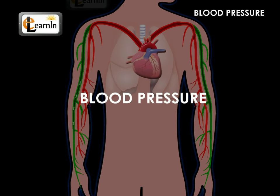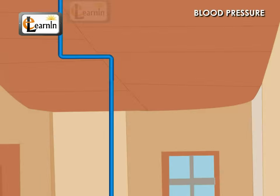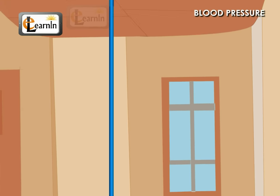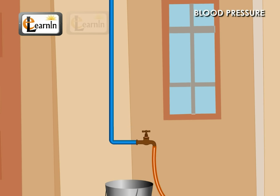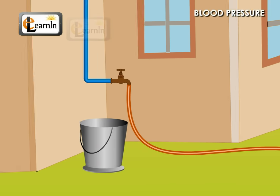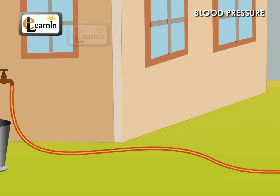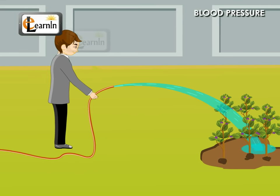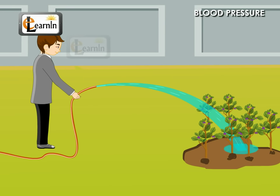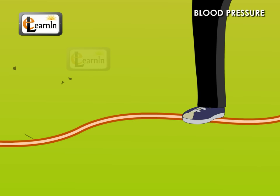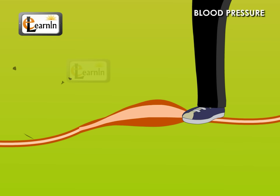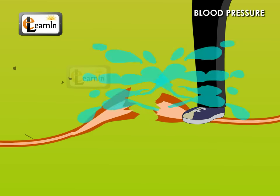Blood Pressure. Water flows with higher pressure when you connect a tube to a pump set operating in your field or house. Also, the tubes burst open if the pressure is very high.